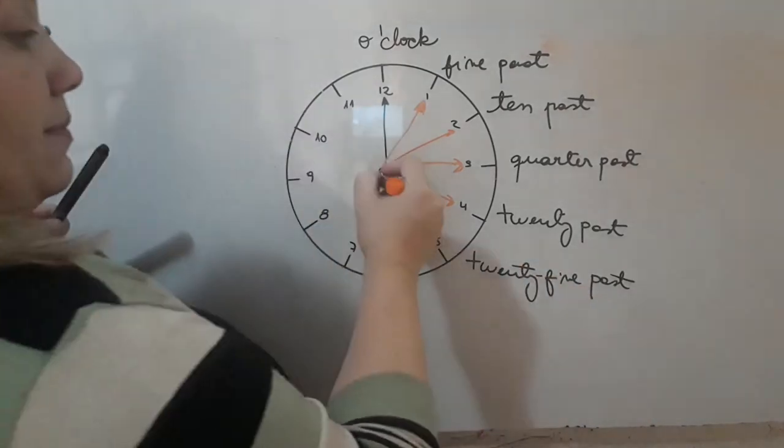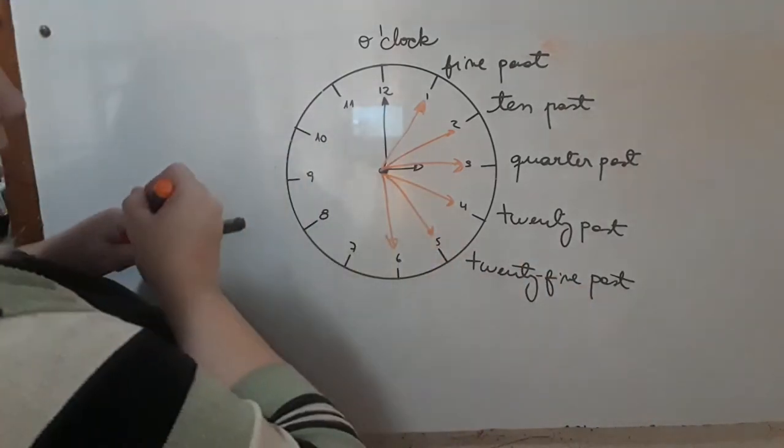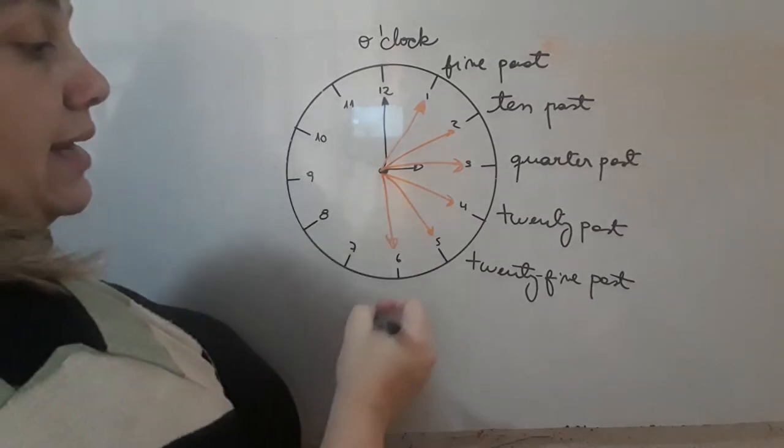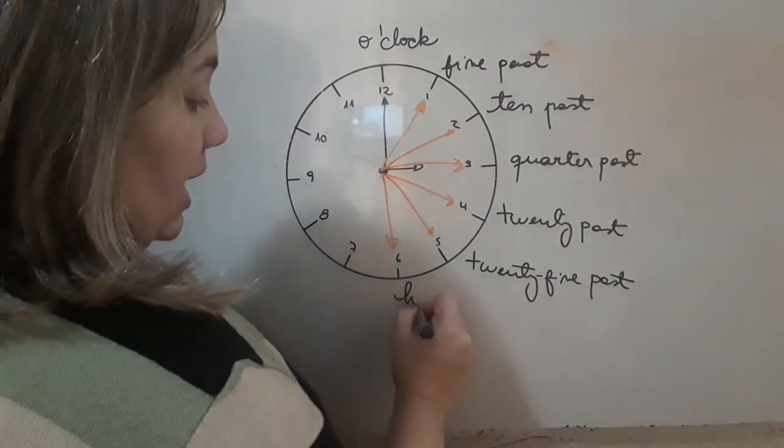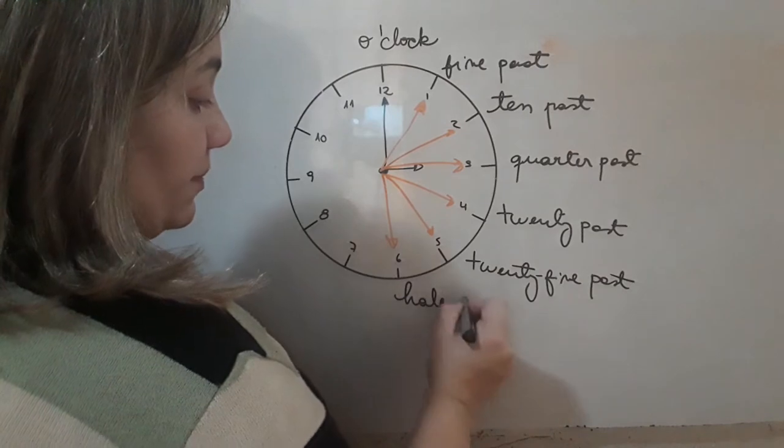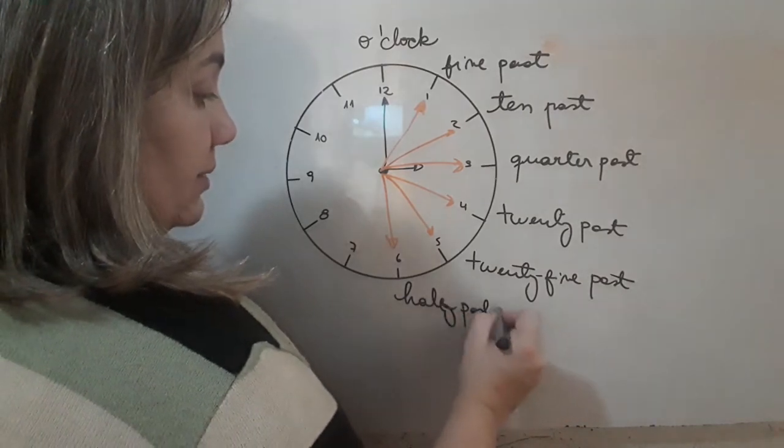Y acá cuando llegue y media, en vez de decir tres y media, decimos, media pasadas las tres. It is half, it is half past three.